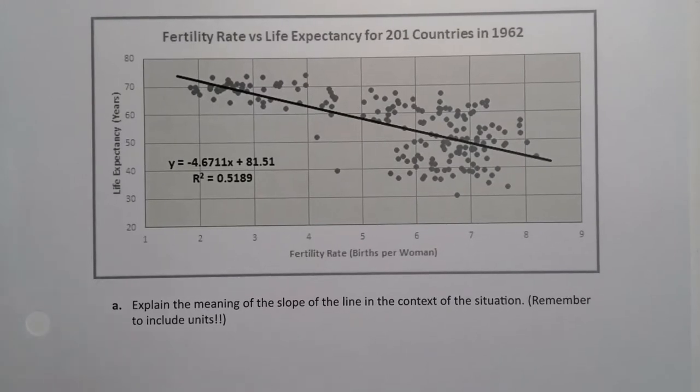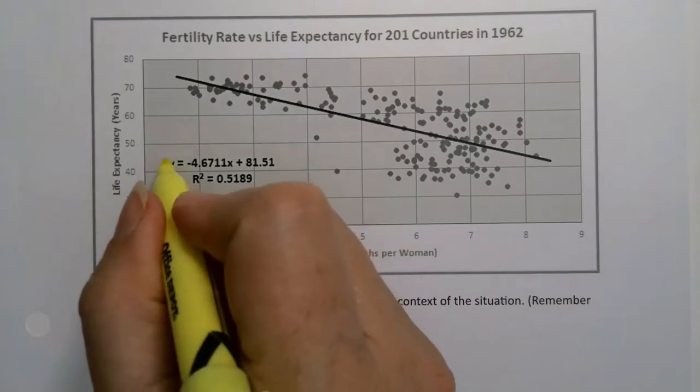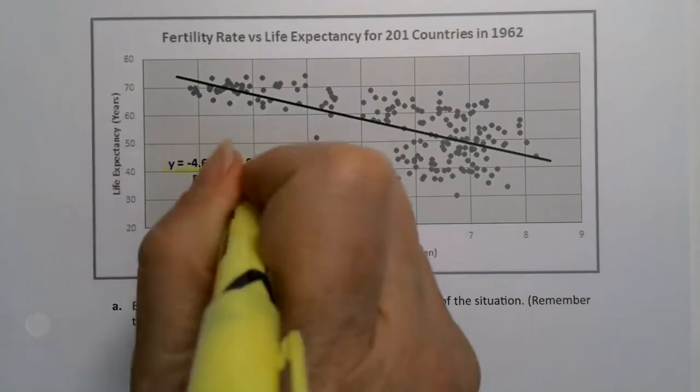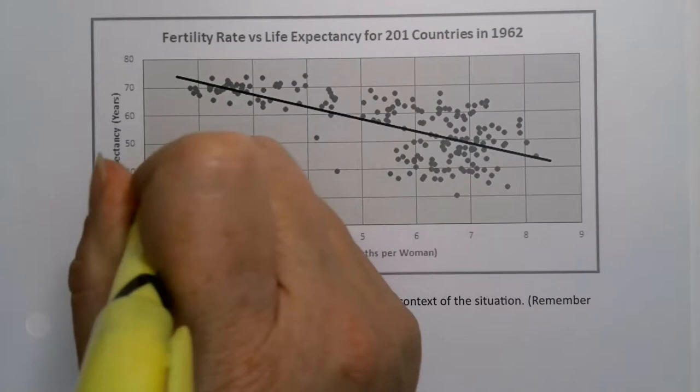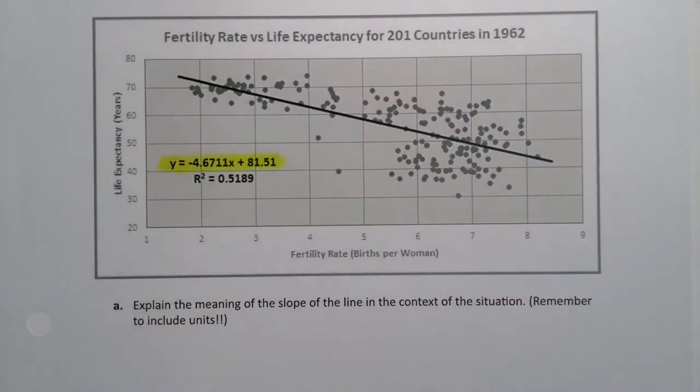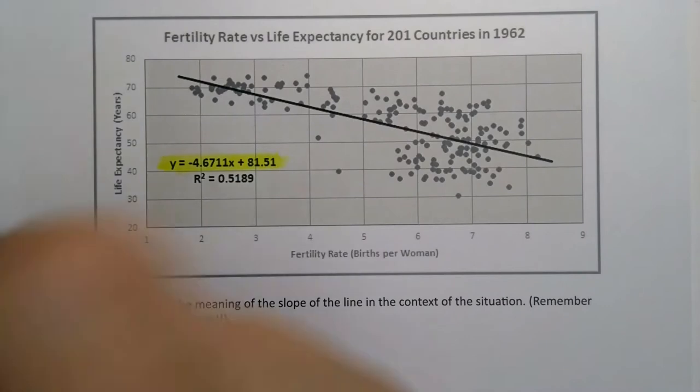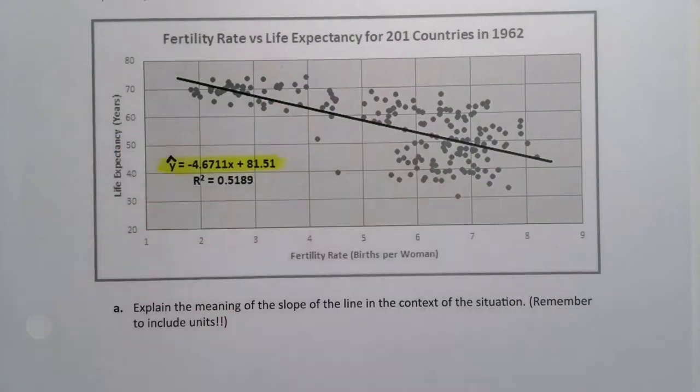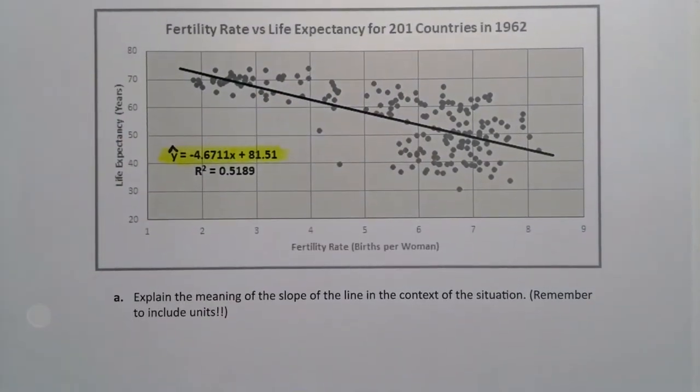So you might be thinking, slope of the line? Where do I have that? It's right here. The computer is giving it to you, right there. Well, that's the equation of the line, I should say. Technically, there should be a little hat over its head, but I wasn't able to do that when I typed it up.